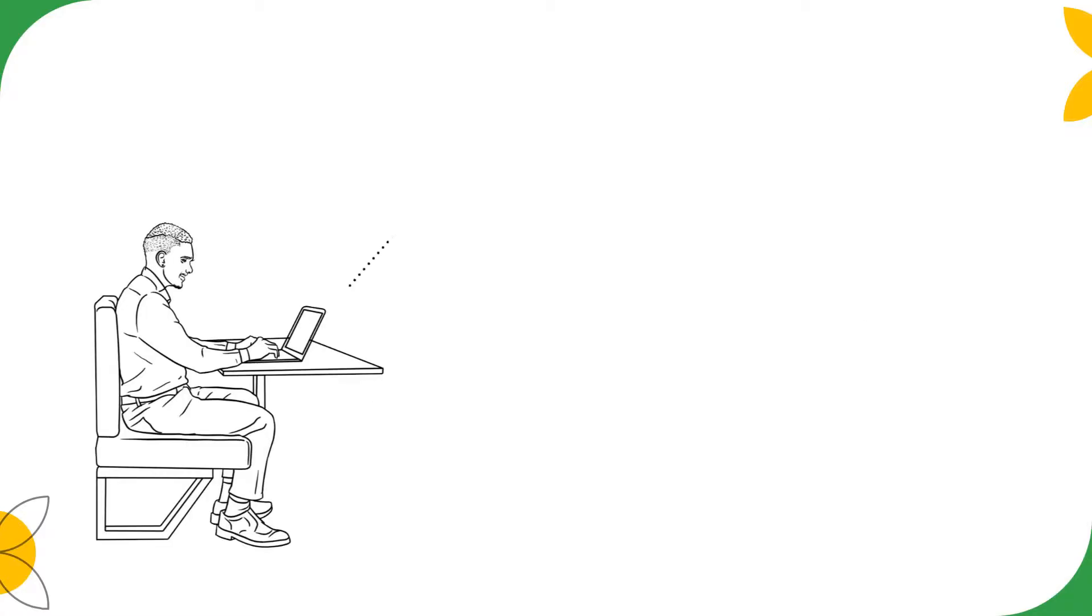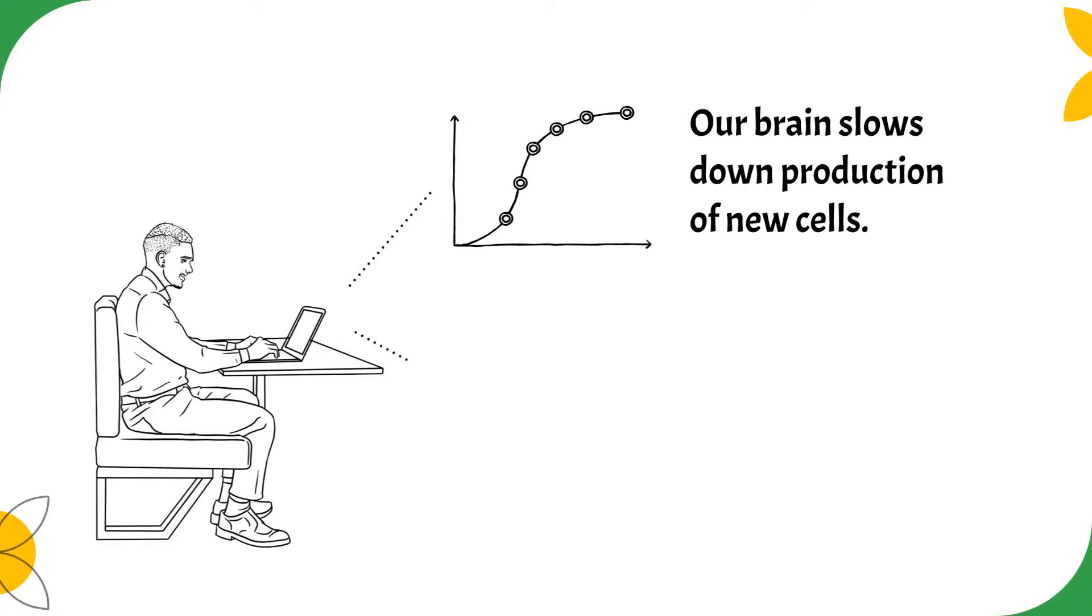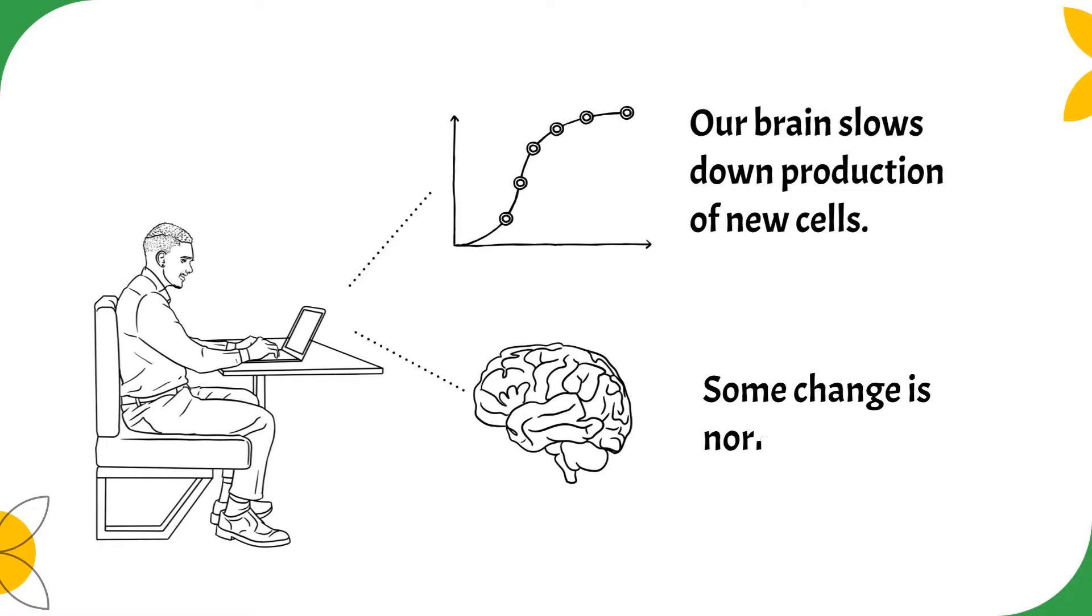But what do these changes look like? As we age, our brain slows down the production of new brain cells. Live until you are 90, and you can expect to lose 10% of your brain mass. Because of this, it is normal to experience some brain changes as we age.